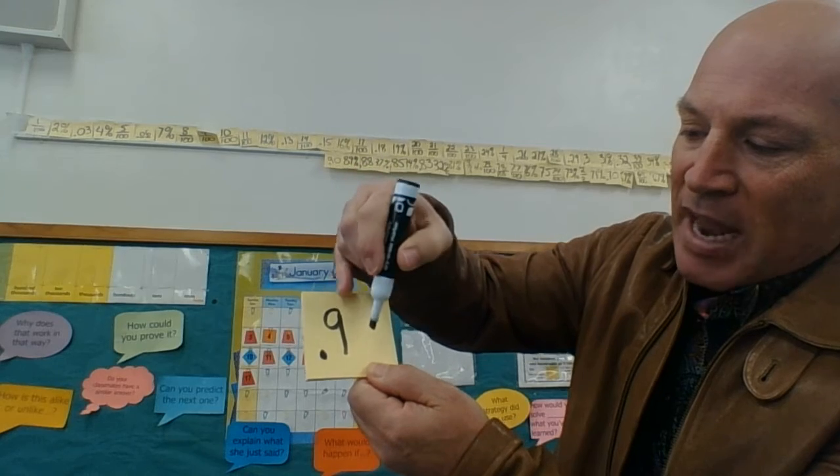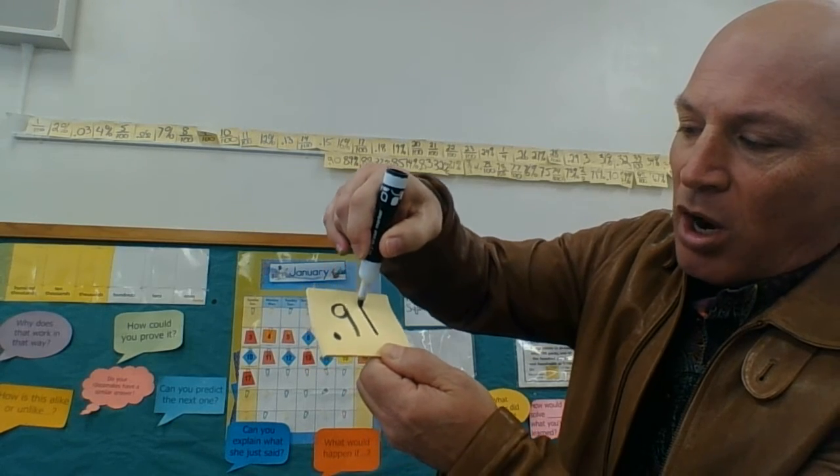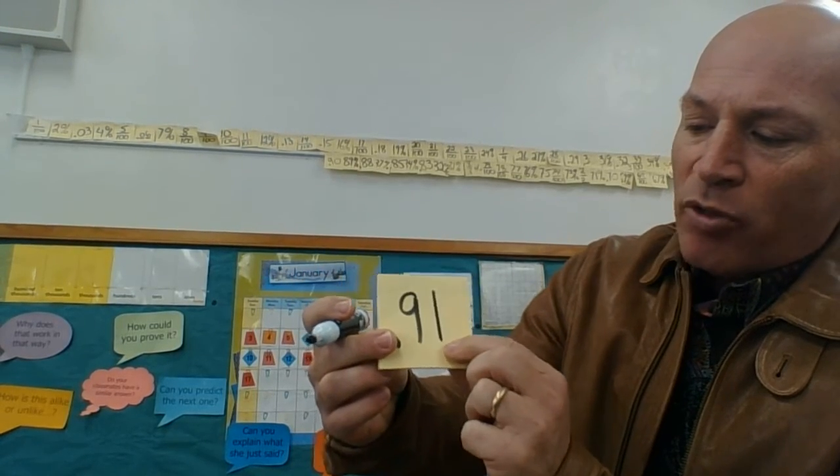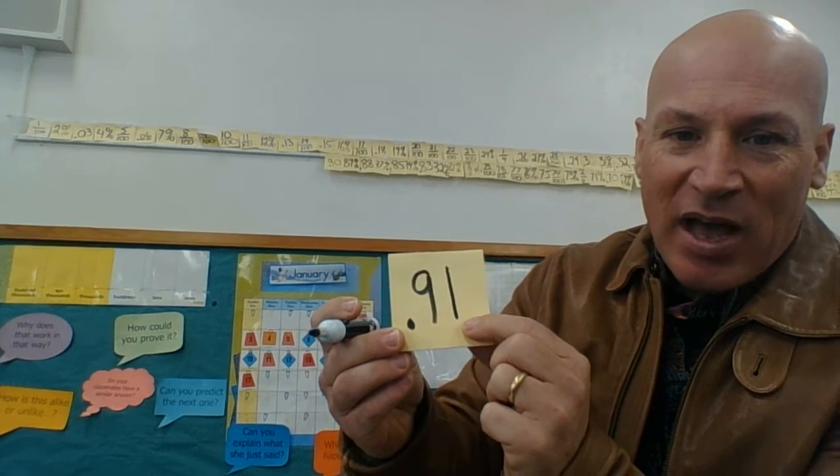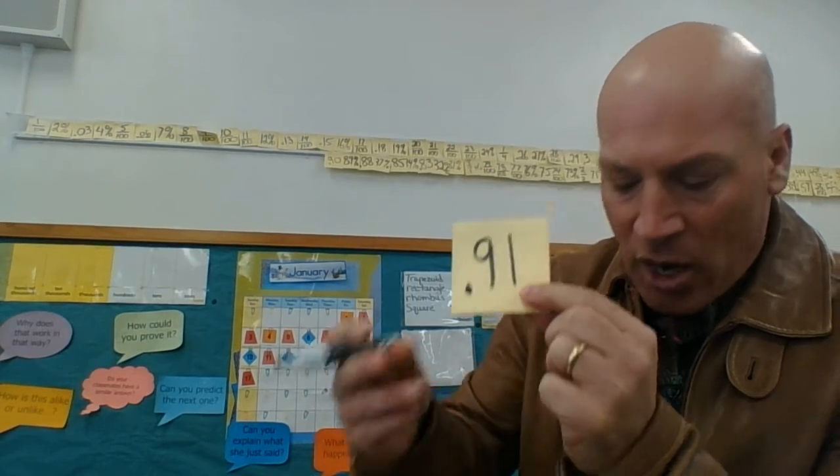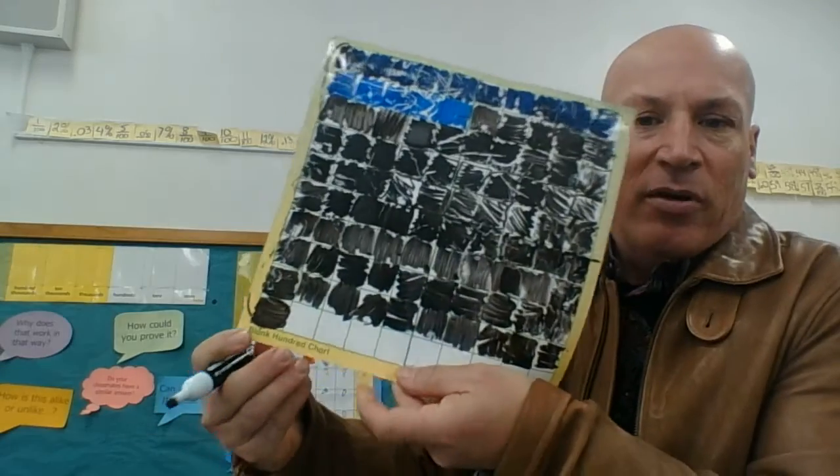Well, we had nine, but now that we added one more hundredth, we're going to start our hundredths place value. And now we have ninety-one-hundredths. Can you all see how that happened on there?